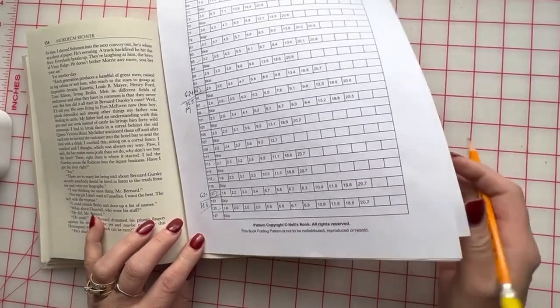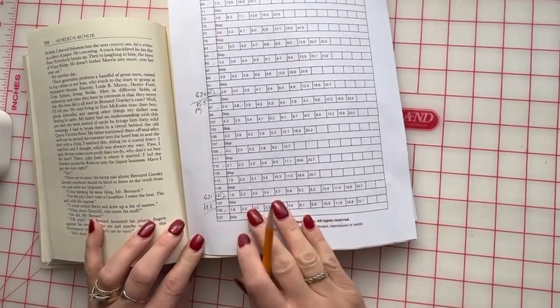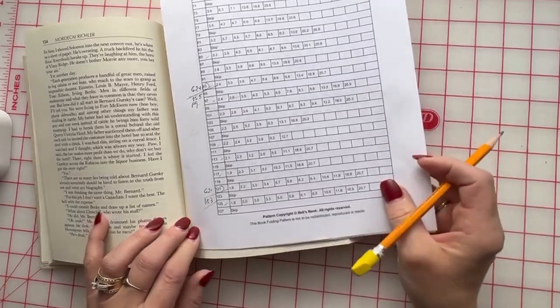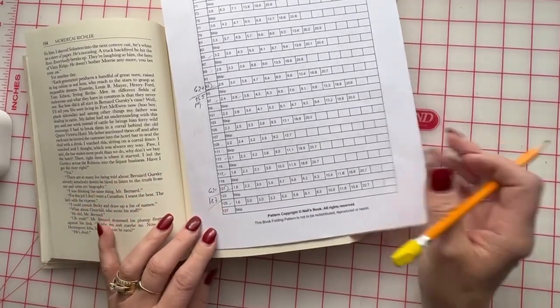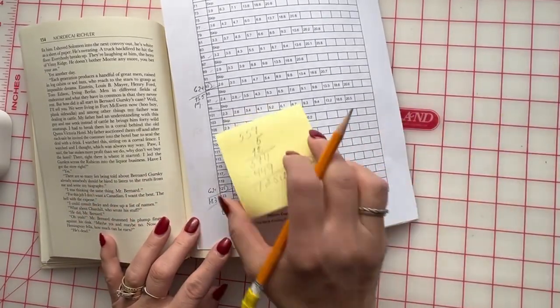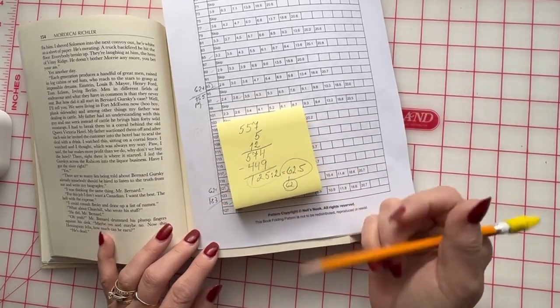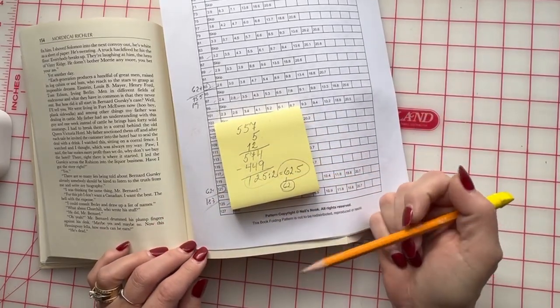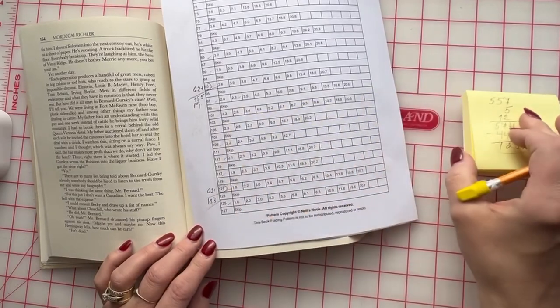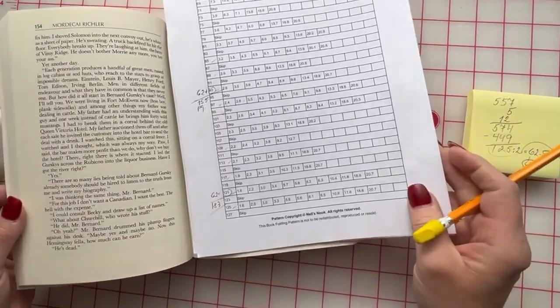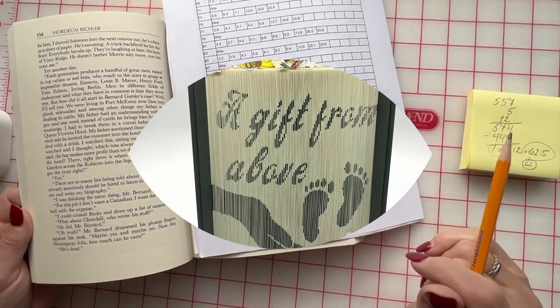And that's all it is. You just follow your pattern as you have it and just add the number that you calculate according to your pattern and to your book pages, and you should be good to go. Hope you will enjoy your book folding pattern and I will see you next time.